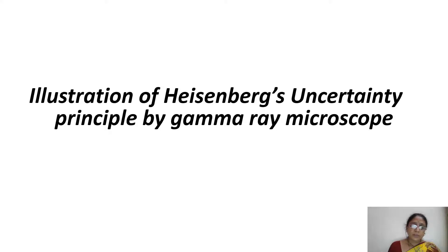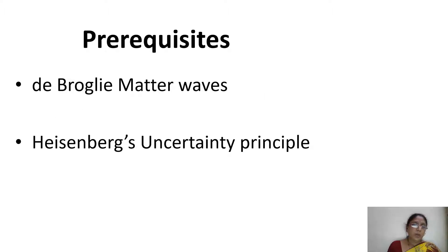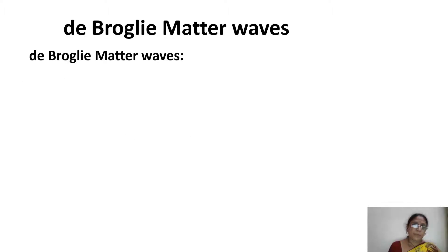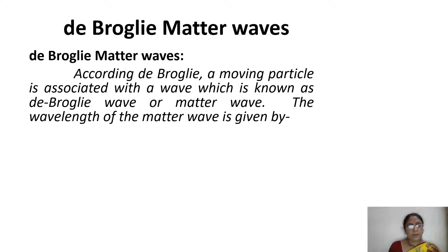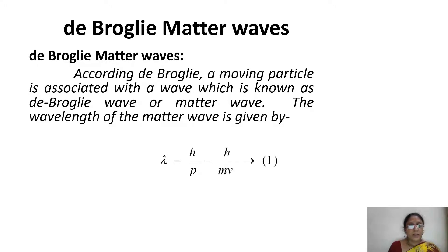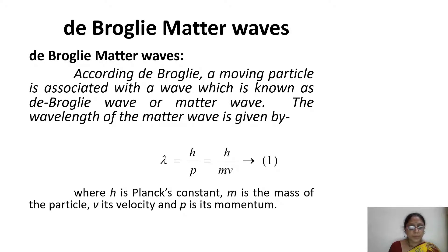Before going to consider the gamma ray microscope, we shall know what is a de Broglie matter wave and what is the Heisenberg uncertainty principle. According to de Broglie, any moving particle is associated with a wave known as a de Broglie wave or matter wave, and the wavelength of that matter wave is given by lambda equals h by mv, where h is Planck's constant, m is the mass of the particle, v is its velocity, and p is its momentum.